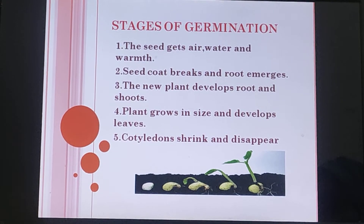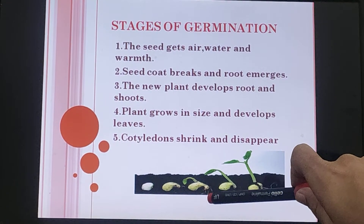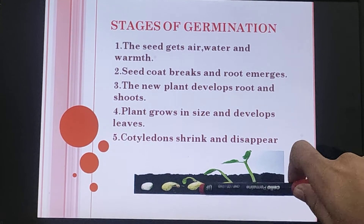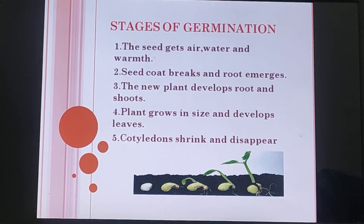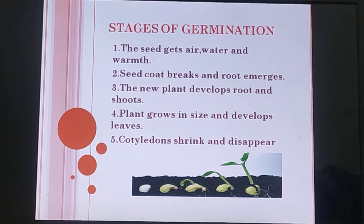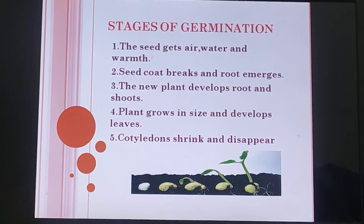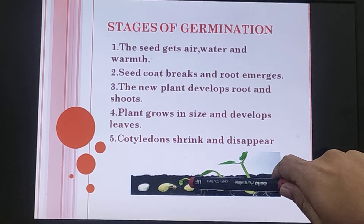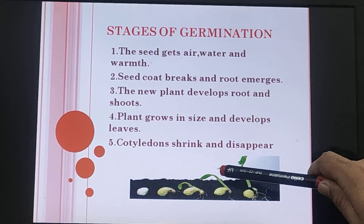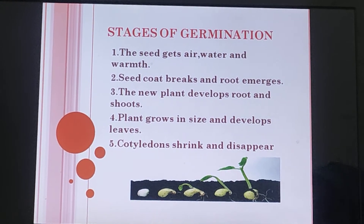After that, the radicle develops into roots, which start coming out from the radicle. Then the seed grows in size and develops a shoot — you can see a small shoot coming up — and similarly, the shoot then develops leaves.